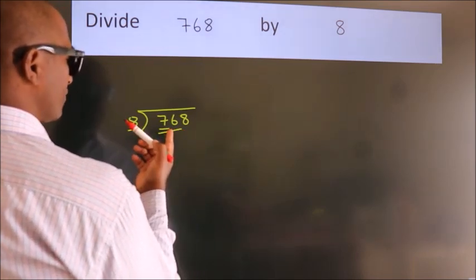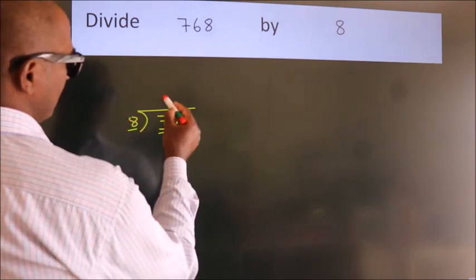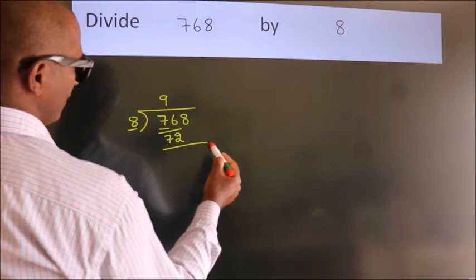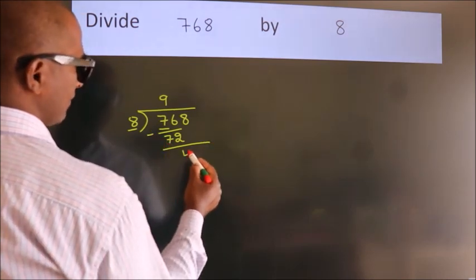A number close to 76 in 8 table is 8 nines 72. Now we should subtract. We get 4.